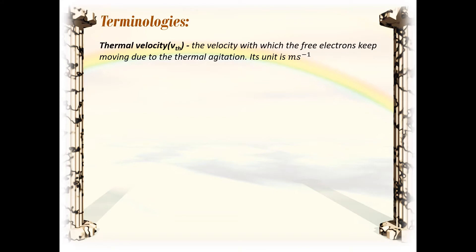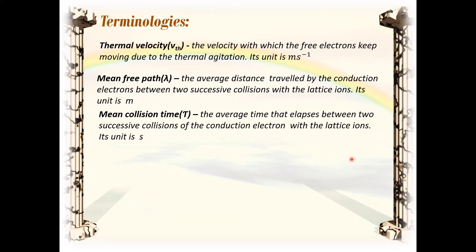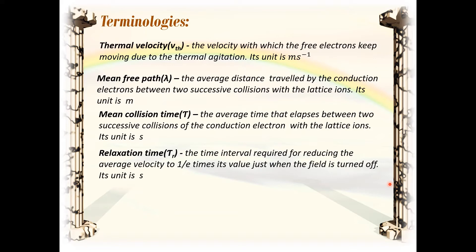The different terminologies used: Thermal velocity — the velocity with which the free electrons keep moving due to thermal agitation; its unit is meter per second, denoted by v_th. Mean free path (lambda) — the average distance traveled by the conduction electrons between two successive collisions with the lattice ions; its unit is meter. Mean collision time (τ) — the average time that elapses between two successive collisions; its unit is second. Relaxation time (τ_r) — the time interval required for reducing the average velocity to 1/e times its value just when the field is turned off; its unit is also second.